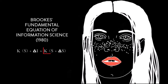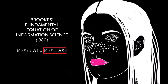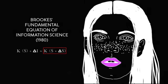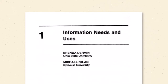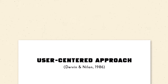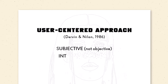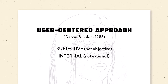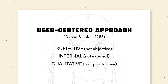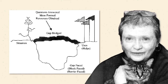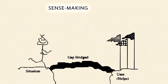It posited that internal knowledge structures are changed through the addition of new information. This turn was anchored by a book chapter on information needs and uses by Brenda Dervin and Mike Nilan. It proclaimed and outlined a new user-centered approach that emphasized subjective rather than objective information, internal rather than external information behaviors, and qualitative rather than quantitative research methods. A quintessential idea of this turn was Brenda Dervin's Sensemaking — a framework for understanding how individuals overcome gaps in their knowledge.